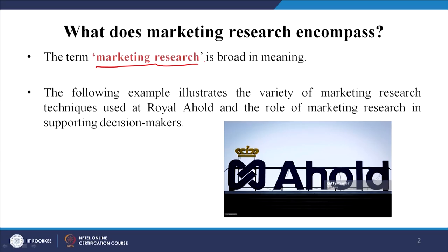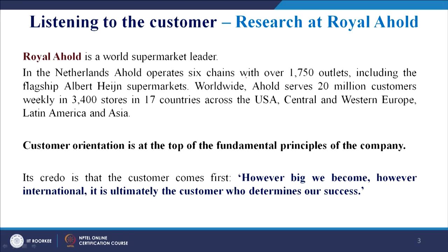Let us begin this lecture series with an example. This is an example of the use of marketing research techniques at Royal Ahold, which is basically a retail chain — a supermarket leader in the Netherlands. This company operates 6 chains with 1,750 outlets including its flagship Albert Heijn Supermarkets. Worldwide, Ahold serves 20 million customers weekly in 3,400 stores across 17 countries, for example in the USA, Central and Western Europe, Latin America, and Asia. Customer orientation is at the top of their fundamental principles.